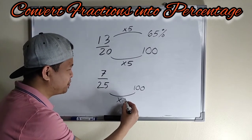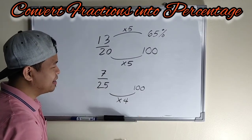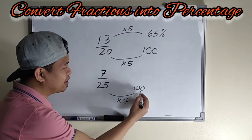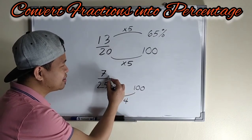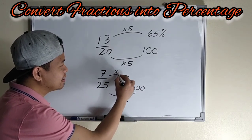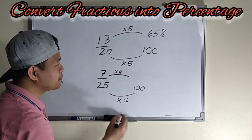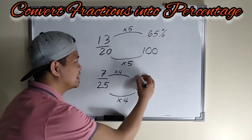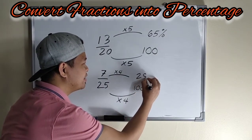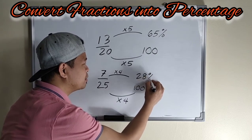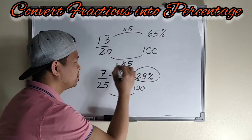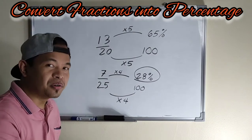So ano daw yung pwede natin i-multiply sa 25 to get 100? Okay. So 4. So 25 times 4 is 100. Then ganon din dito sa taas. Times 4. 7 times 4 is 28. So this is our percentage of 7 over 25.